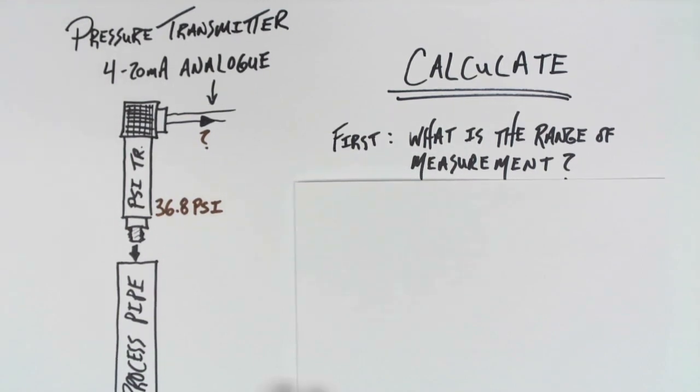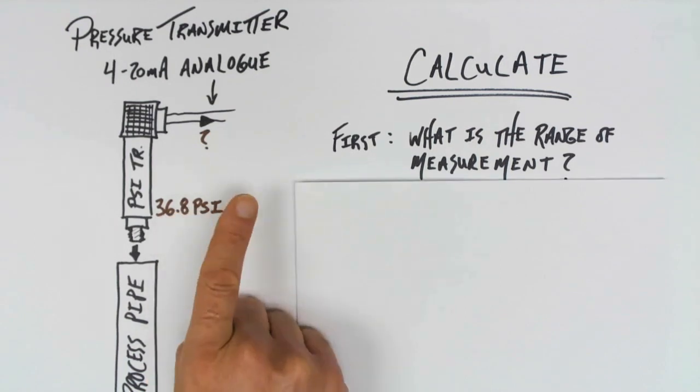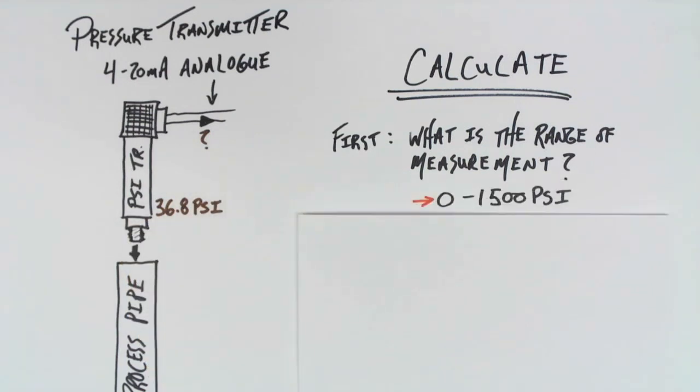What I mean by that is we're actually measuring 36.8, but what's the high end that this transmitter is supposed to measure, and what's the low end? I'm going to say for this example that we're expecting with this pressure transmitter to measure any pressure between 0 to 100 PSI.